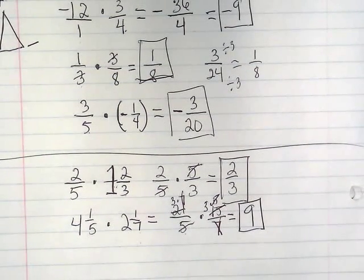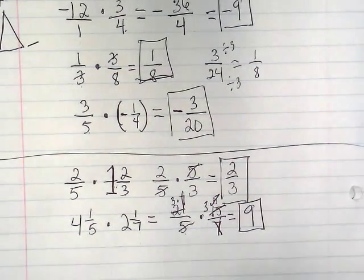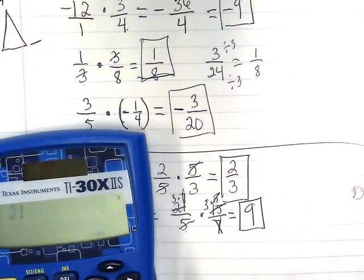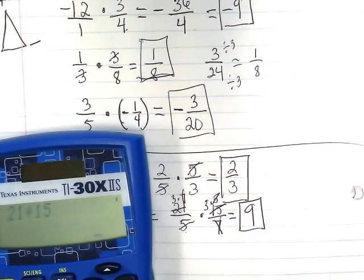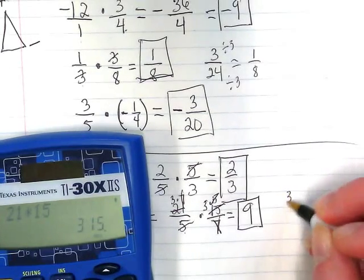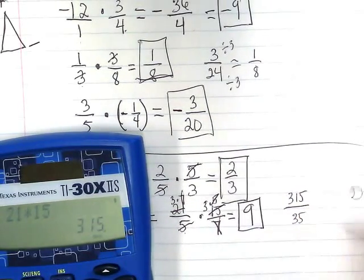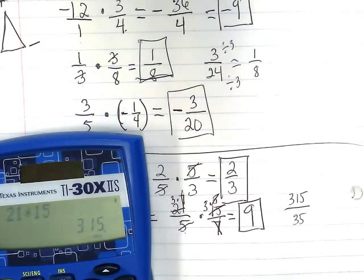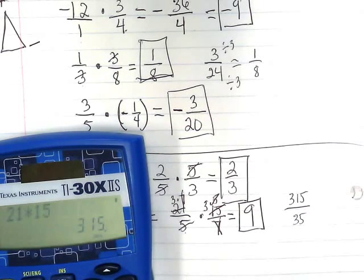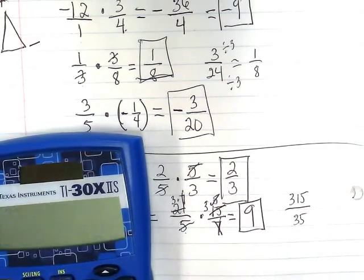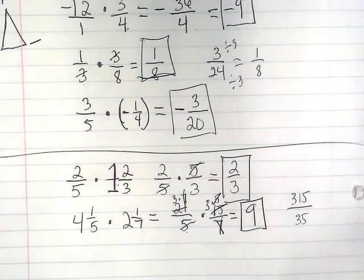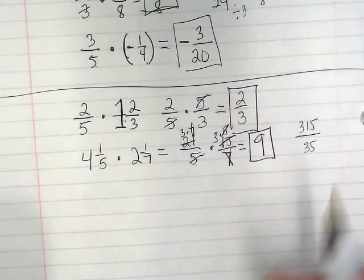It looks a little bit messy, but it's a lot easier in the long run than doing 21 times 15, which would have been 315 over 35. And then what would you guys have done? Divide by 5. Then you would have divided by 7, hopefully, right? So that canceling before you multiply can really save you from dealing with some large numbers on the numerator or denominator of your fraction.